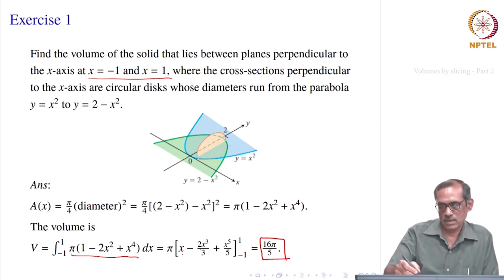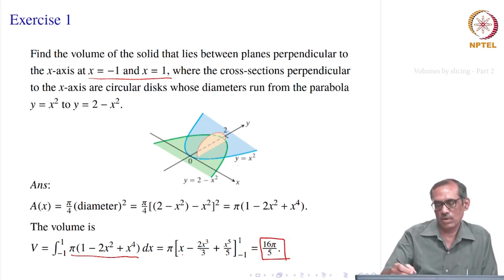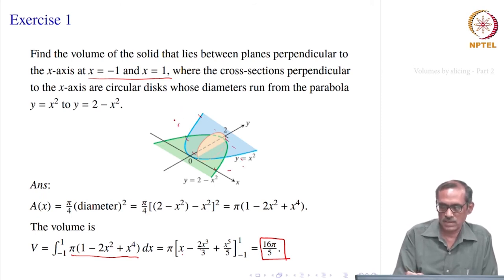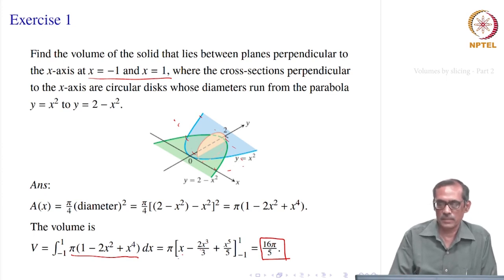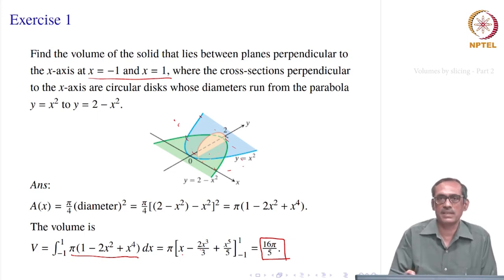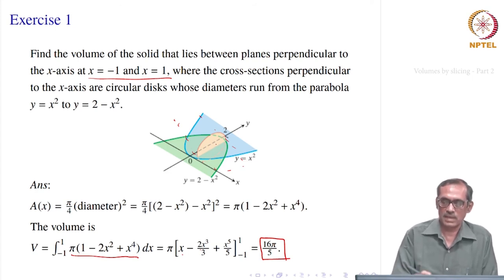Here you see we have not really plotted the whole solid, but we already have the information that it goes from −1 to 1. It is something like a cylindrical type, but not exactly a cylinder — it is not uniform. At each x, the cross section is a circle, and that circle changes size depending on where x is. It is enough to find the cross sectional area because it will be plugged into the integral.